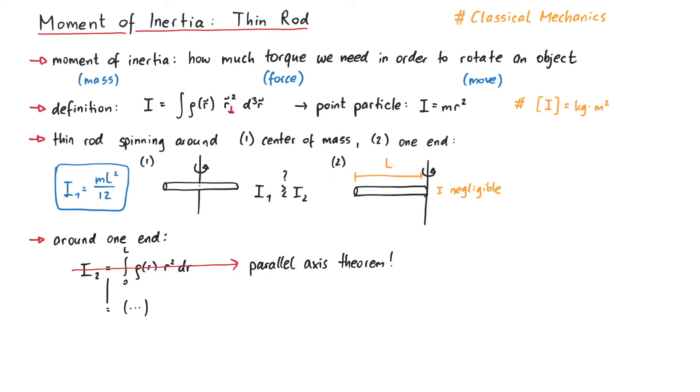Using this theorem, the moment of inertia i2 is given by i1 plus m times L over 2 squared, which yields mL squared over 3.